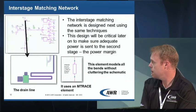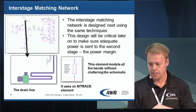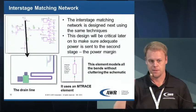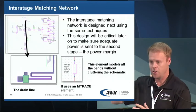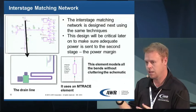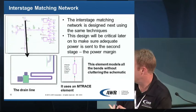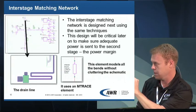Moving along, the interstage matching network uses the same techniques as the output match. One thing to highlight is a particular model called an MTrace. This single model captures a whole meandering trace going left, right, left, right — all captured in one element. It's layout-driven: you draw the trace in the layout and all the bends and discontinuities are modeled within that single element, so your schematic doesn't get cluttered with what would otherwise amount to about ten different elements if you did it with traditional microstrip line and microstrip bend elements.